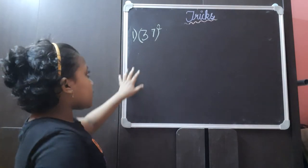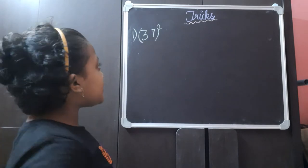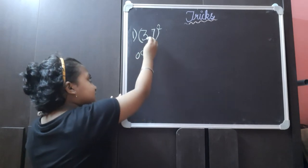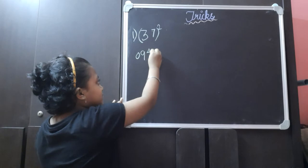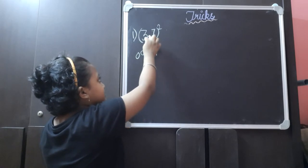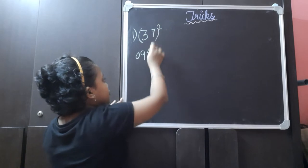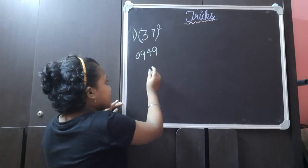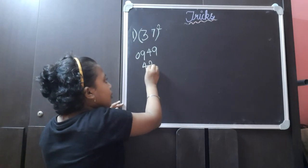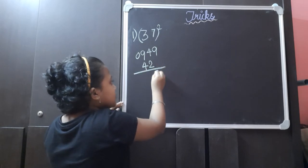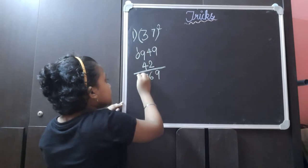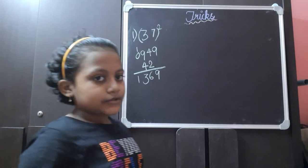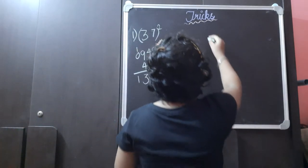First, let us revise the previous method. For example, 37 square. First, 3 square which is 9, then 7 square which is 49, then we multiply 3 into 7 into 2 which is 42. We write 42 leaving the units place, then we add everything and we get 1369 as the answer for 37 square.